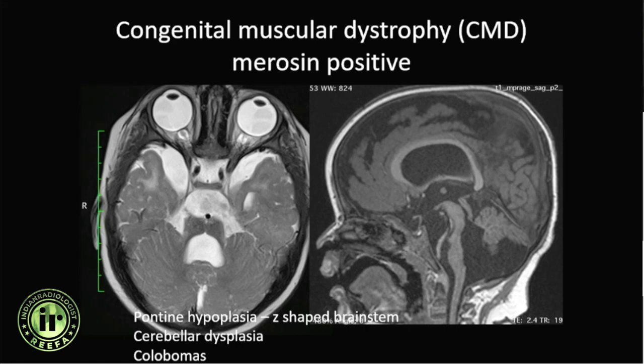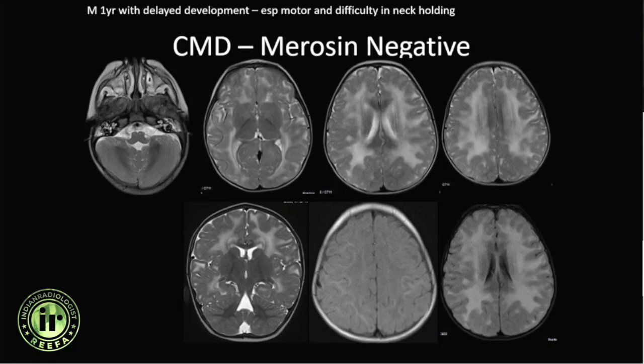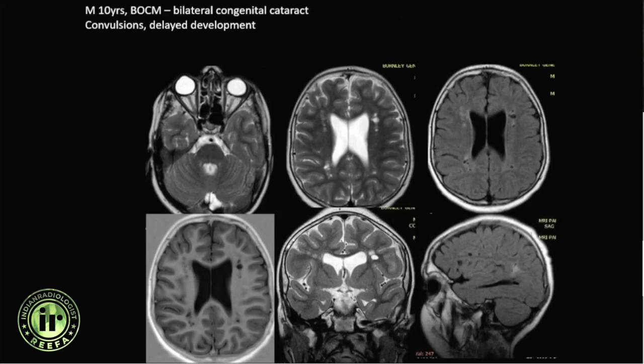Another patient — a one-year-old with predominantly motor delayed development — showed significant bilaterally symmetric white matter signal abnormalities. This was merosin-negative congenital muscular dystrophy. In this case the brainstem is normal and there are no cerebellar cysts, distinguishing it from the merosin-positive type.